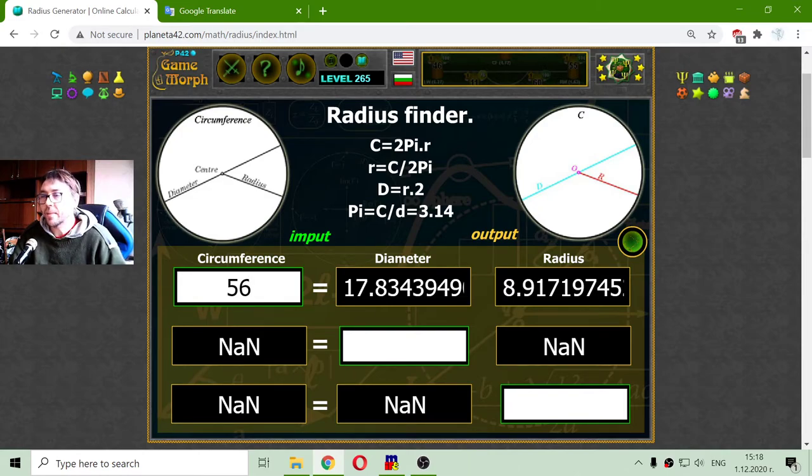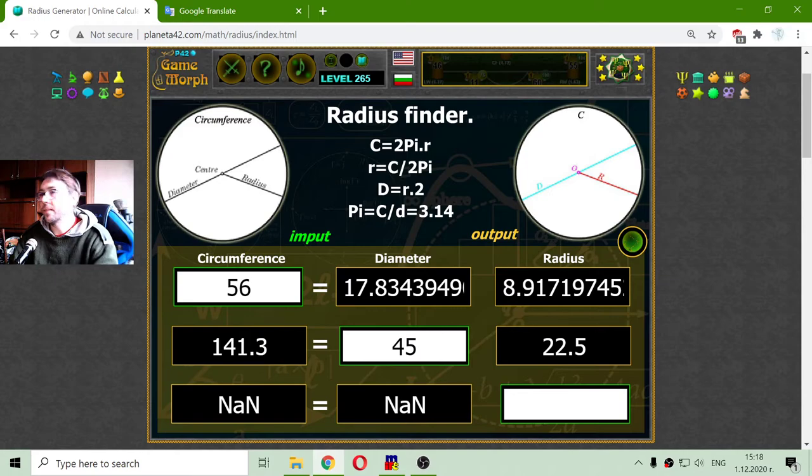Now if I have the diameter, let's say diameter of a circle is 45, that will mean the radius is 22.5 and the circumference is 141.3.